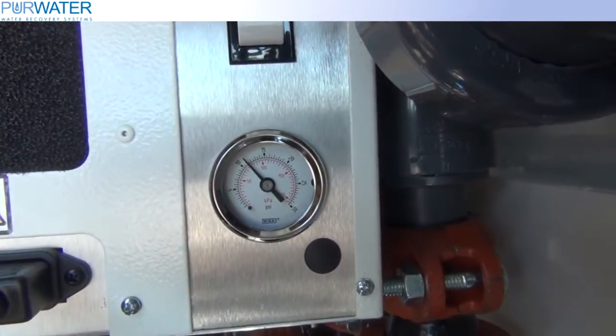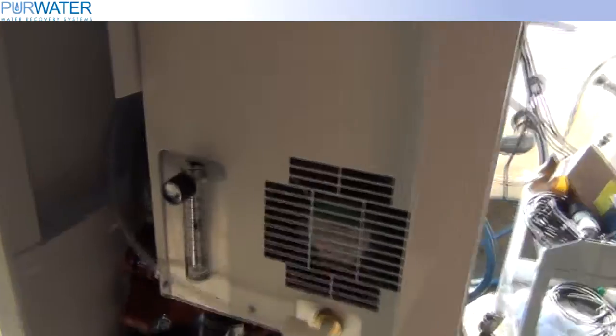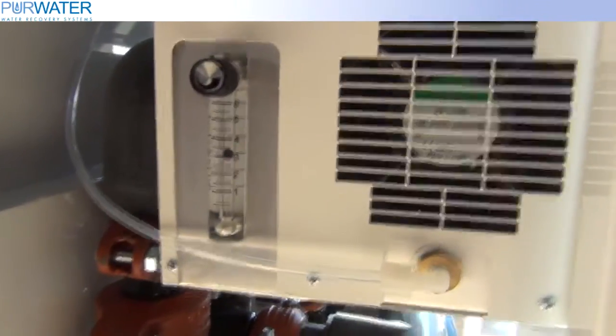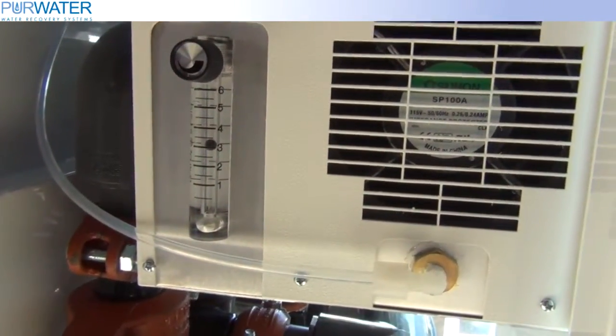The first item in setting an ozone system is checking the pressure and flow on the oxygen concentrator. If this is a new reclaimed system, these settings should have already been set from the factory.